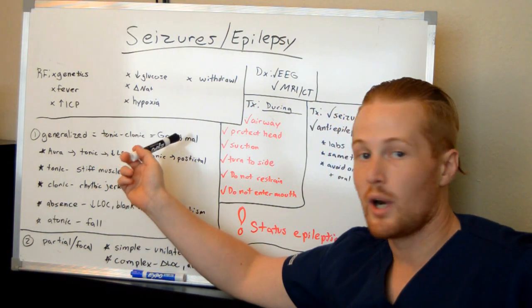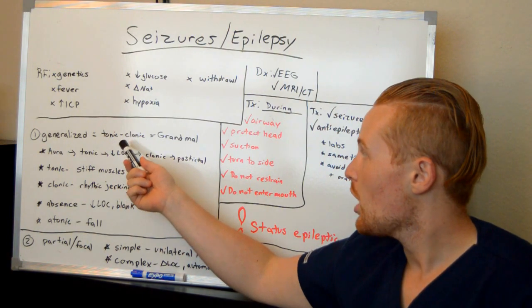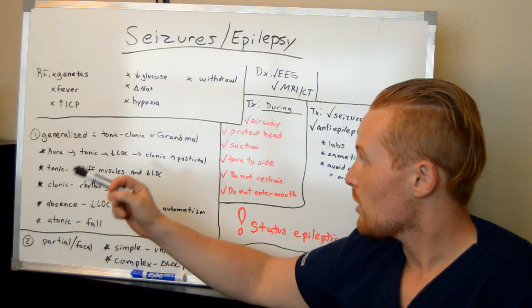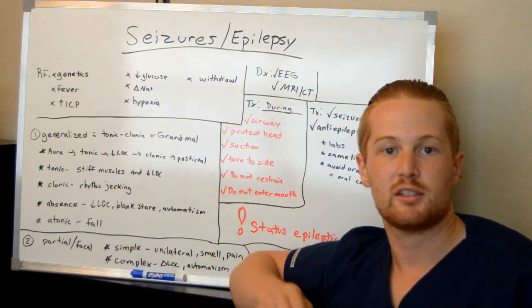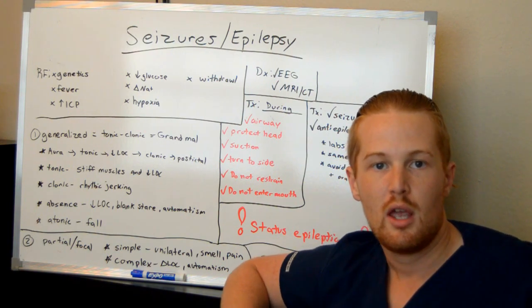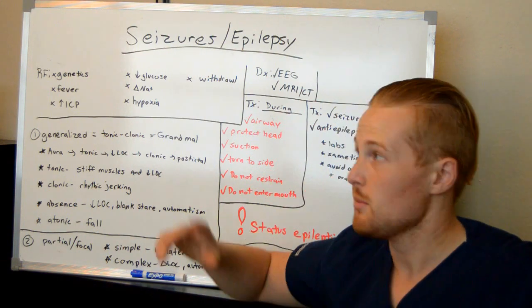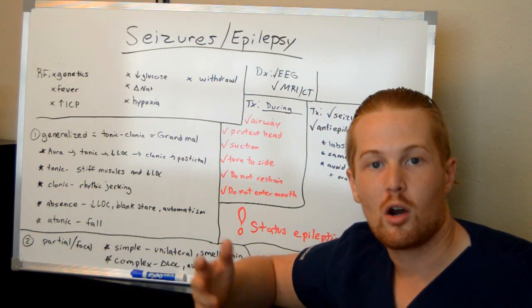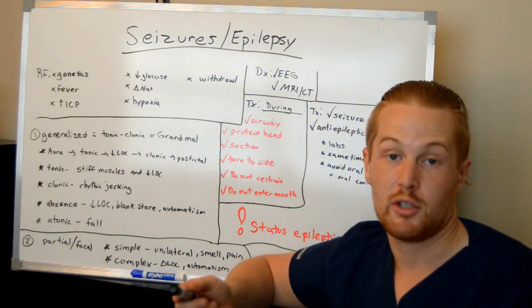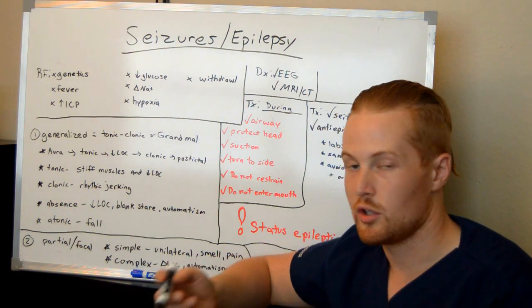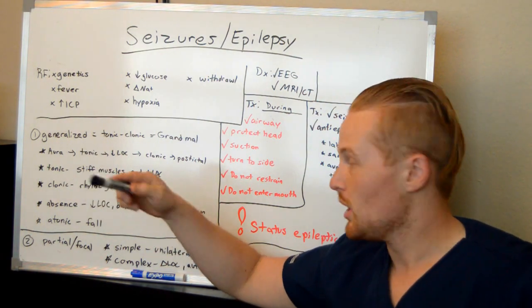Another word for generalized is grand mal, and then you've got tonic-clonic seizures. With a generalized seizure affecting the whole body, a patient could have an aura — a warning sign that the patient feels, like a weird smell or a strange sensation. This is typical of epilepsy. Patients may be aware of their auras and can prepare themselves — for example, getting to the ground before the seizure starts.